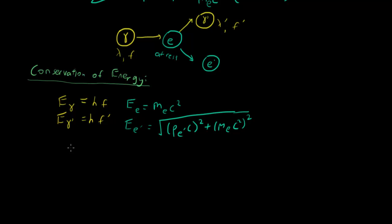So we know that the energy lost by the photon must equal the energy gained by the electron. What is the energy lost? Well, the energy lost is basically energy before minus energy after. And what is the energy gained? The energy gained is energy after minus energy before.